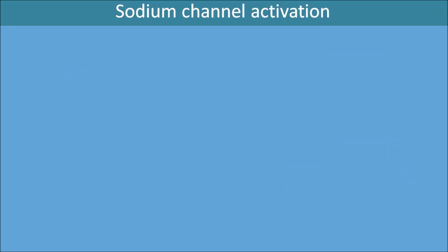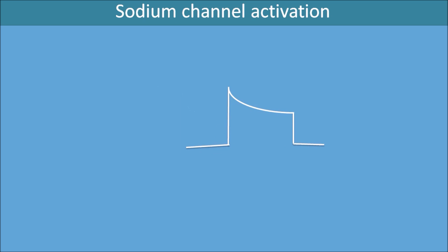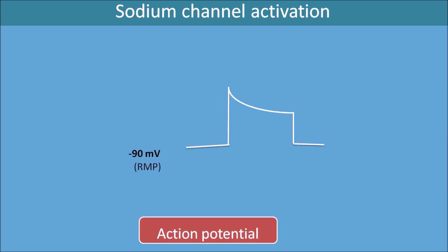How is the sodium channel activated in the heart? If you observe the electrophysiology, the normal resting membrane potential of the heart is around minus 90 millivolts. At this resting membrane potential, the heart cells are inactive. This resting membrane potential can be slowly increased by an action potential to minus 70 millivolts, which is called the threshold potential. This slow rise from minus 90 to minus 70 millivolts causes activation of sodium channels in the cardiac cell.